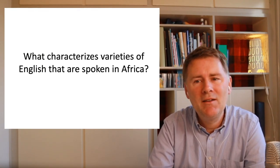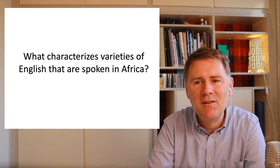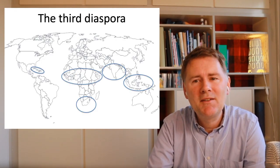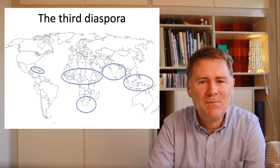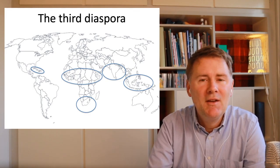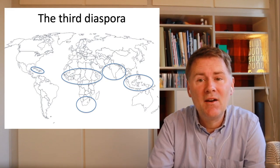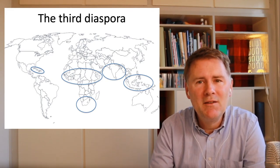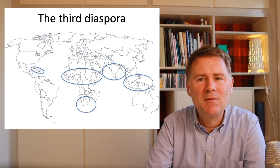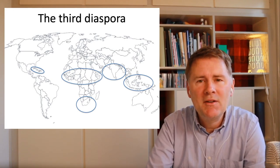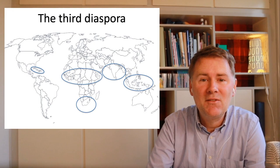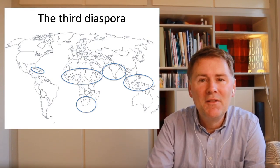What characterizes varieties of English spoken in Africa, aside from their geographical distribution? It's useful to take a step back and look at the global picture. African Englishes are part of the so-called third diaspora of English. The first diaspora is the move of English from England to Scotland, Ireland, and Wales. In the second diaspora, English crosses the ocean to North America, Australia, and New Zealand. The third diaspora concerns the Caribbean, West Africa, East Africa, South Africa, India, and Southeast Asia.